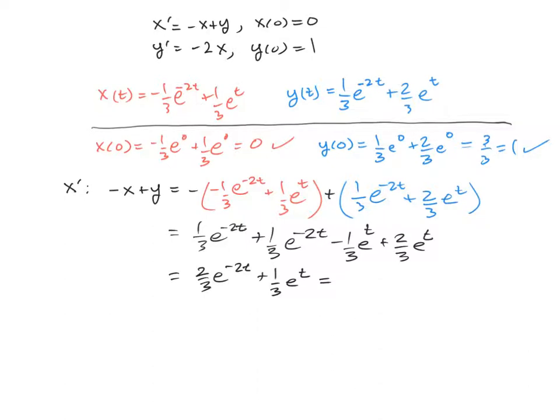And if we now look back at our x solution, back here, and take that derivative, you will notice by the chain rule that we do have, in fact, 2/3 e^(-2t) plus 1/3 e^t. So this is, in fact, equal to x prime. So negative x plus y does equal x prime.